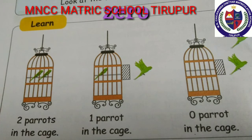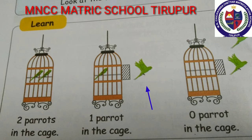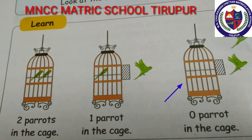Look at the picture. First one, there are two parrots inside the cage. Second one, now one parrot flies out of the cage, only one parrot is inside the cage. Third one, the last parrot is also flying — now no parrot is inside the cage. The cage is empty. This is called zero. Zero means nothing or empty, but zero is also a number.